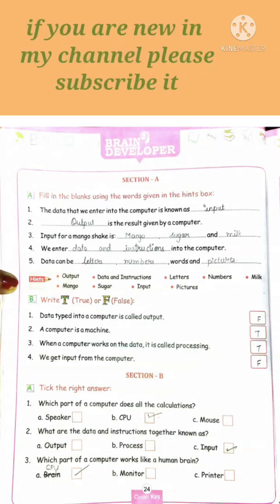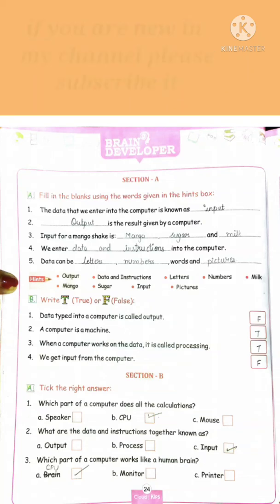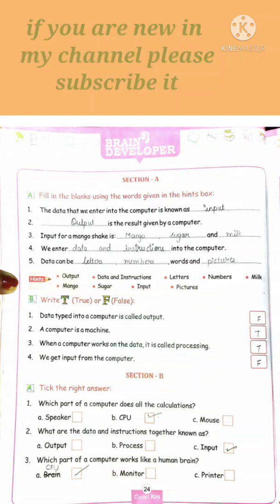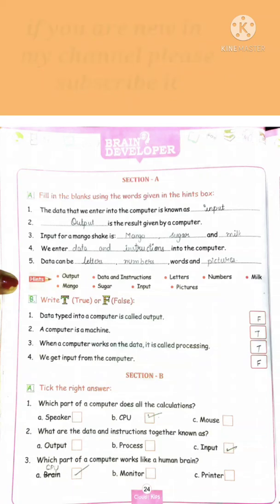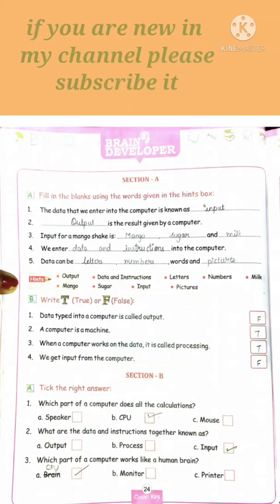Second is write T for true or F for false. In this question you have to write T for the correct statement and F for the wrong statement. First: data typed into a computer is called output. No, it is input, so this statement is false.